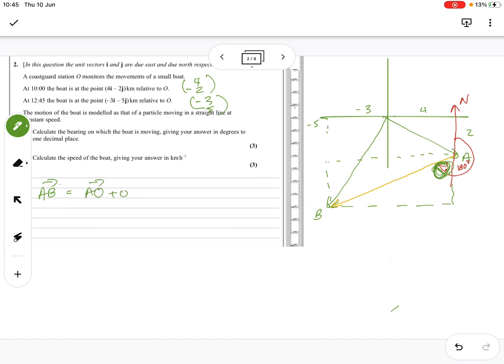So AO plus OB is the vector. I'm here, I want to go to here. I only know that and that. So I'm going negative down the A, positive up the B. So I've got minus four plus two, I'm going to add it to minus three minus five, which will give me minus seven minus three.